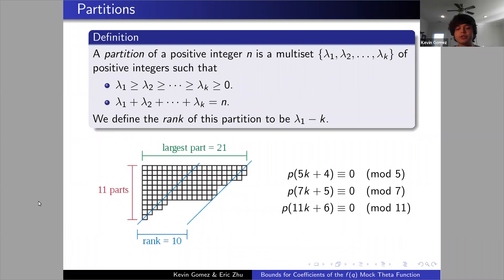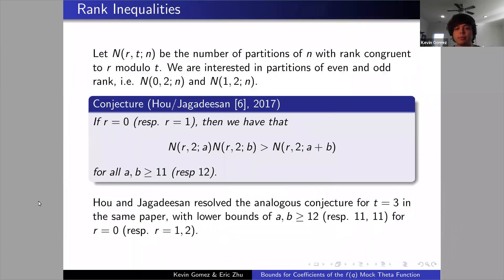Both fortunately and unfortunately, the rank when it was devised could only explain the first two, i.e., the congruences modulo 5 and 7. Later, other statistics such as the crank were developed to deal with the mod 11 case. But the rank in its own right is still a very nice and important statistic. Our work focused on analyzing different kinds of ranks, specifically even and odd ranks. We were interested in N_r,t(n) being the number of partitions of n with rank congruent to r mod t. If we consider N_0,2 and N_1,2, we get ranks that are even or odd. Then we have a conjecture of Howe and Jagadeesan such that we have this convexity result: N_r(2a) times N_r(2b) is greater than N_r(2a + b) for a, b bigger than some explicit constants around about 12.